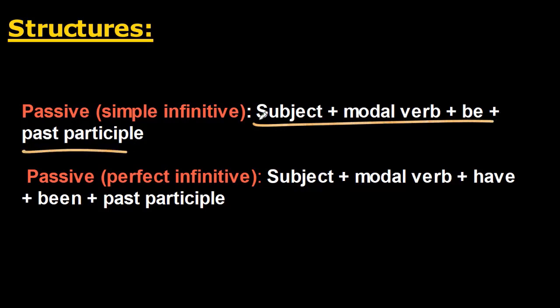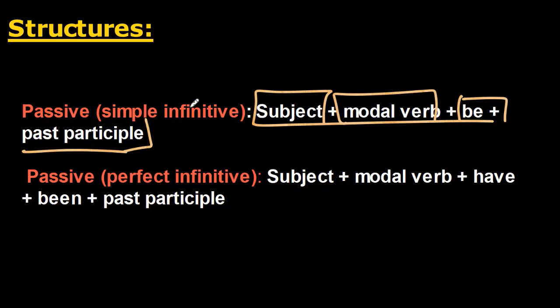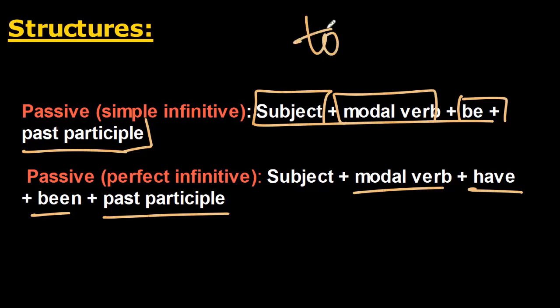The structure for a bare simple passive infinitive is: Subject + modal verb + be + past participle. The perfect bare passive infinitive is: Subject + modal verb + have + been + past participle. Note that the particle 'to' is missing — that's what makes it a bare infinitive. Let's look at some examples.